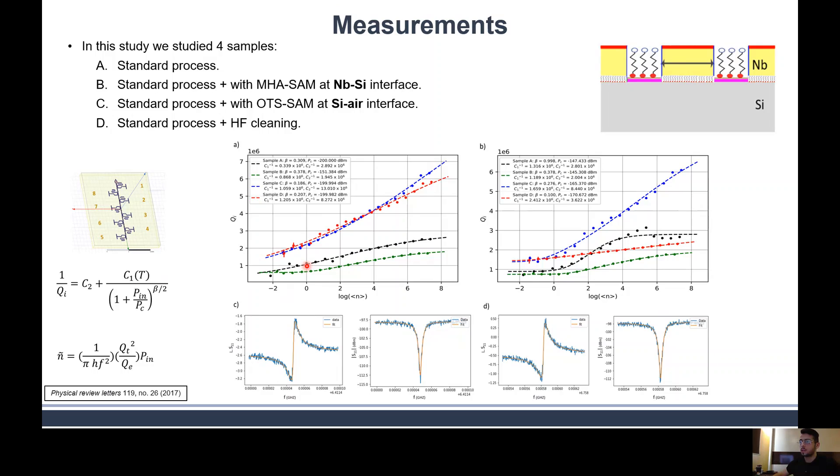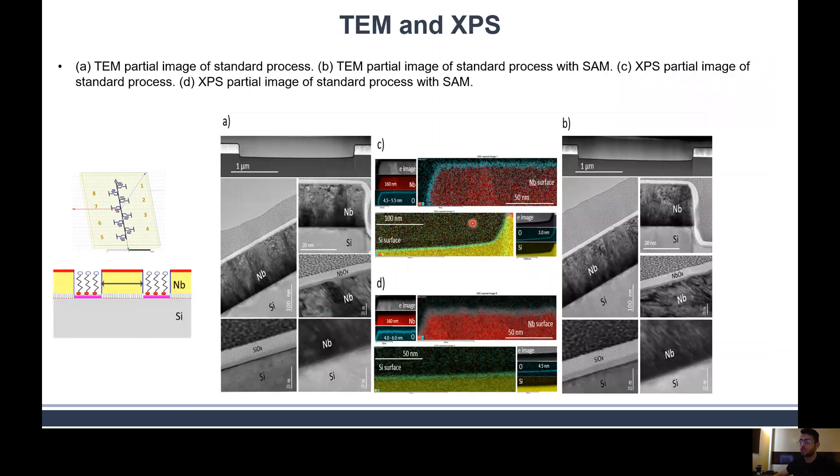Here are the XPS and TEM results. From XPS we can see two figures comparing the standard process and the process where we put surface-assembled monolayers. We can see oxide can grow on the niobium surface and in the silicon oxide in the standard process. But after we put SAM at that interface, we can see significant reduction in the oxides on the niobium and in the silicon.